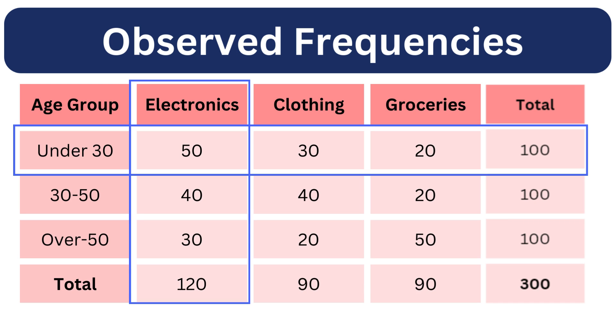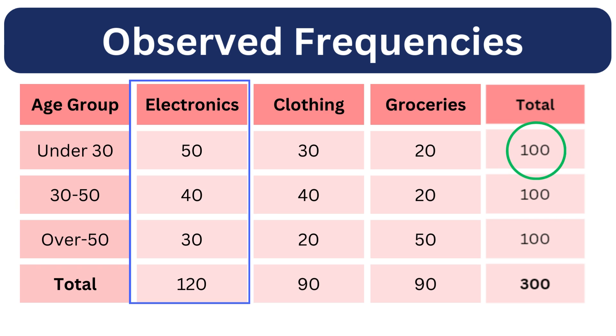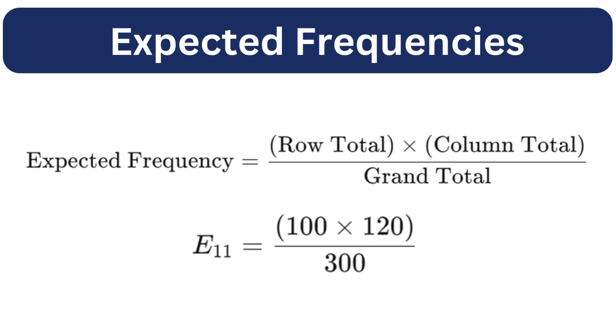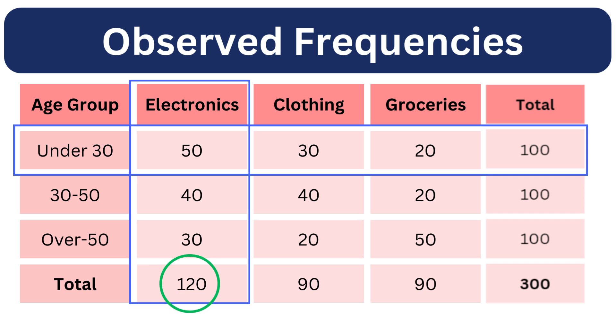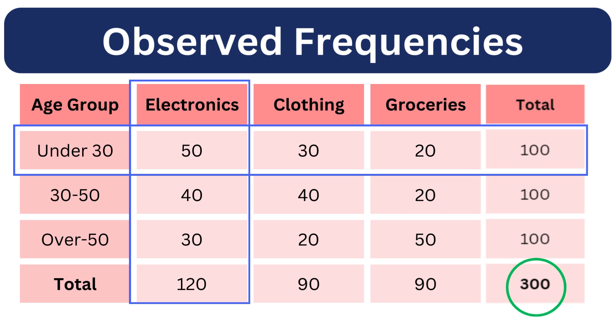For example, the expected frequency for electronics among the under 30 age group is computed as follows. Row count for under 30 in electronics category is 100, while the column count in the electronics category for under 30 is 120.